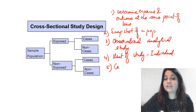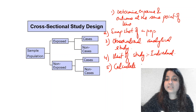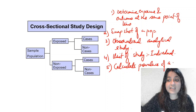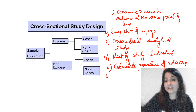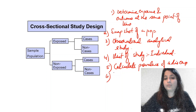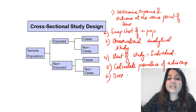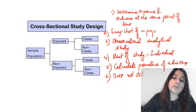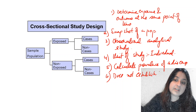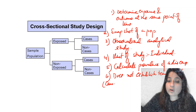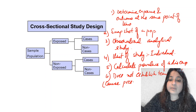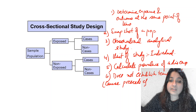This cross-sectional study design helps us calculate the prevalence of a disease — this is one of the most commonly asked MCQs. Another key MCQ point: it does not establish temporality.